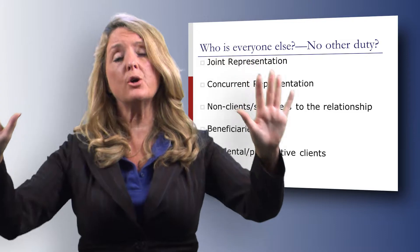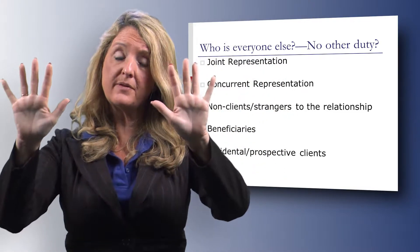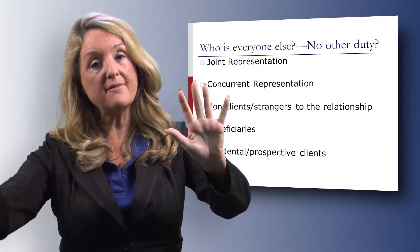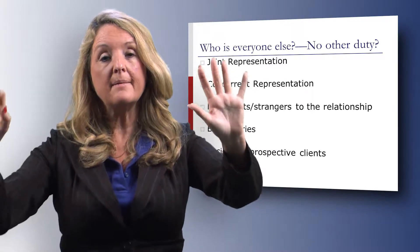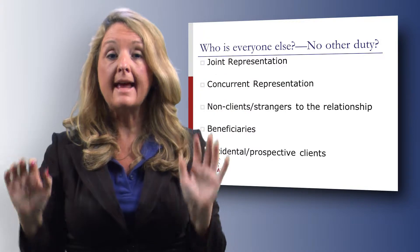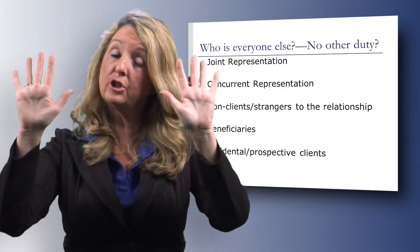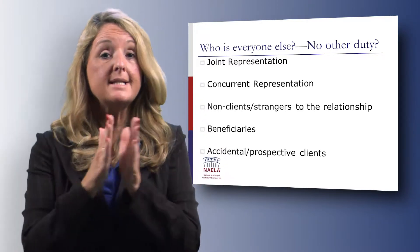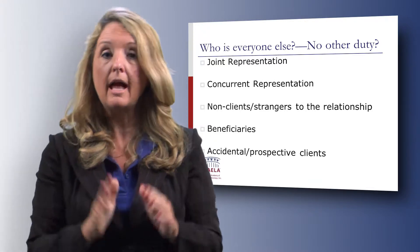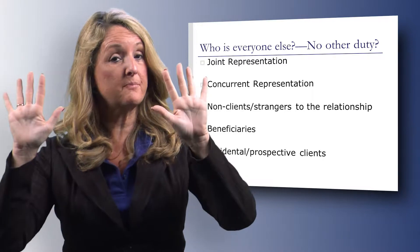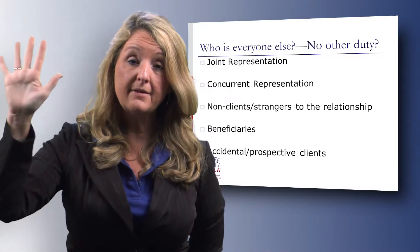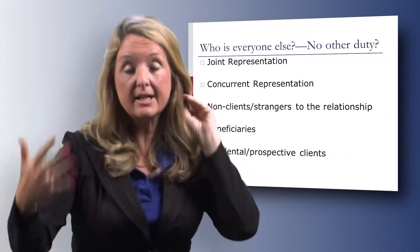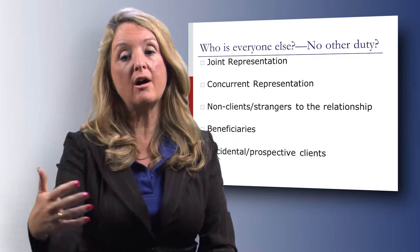Am I entering into a concurrent representation — representing both people at the same time but separately — which means the confidences of one will not be shared with the other? With regard to both joint and concurrent representation, we still have to look at a conflict issue. But we need to identify from the very beginning of the representation: am I representing these folks jointly, am I representing them concurrently, or am I representing just one of them and the other person is not a subject of any representation? That must be done intentionally and very early on.